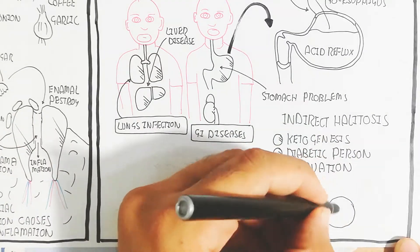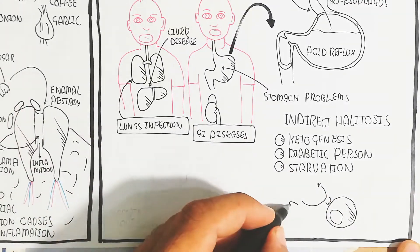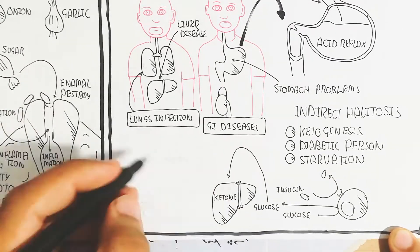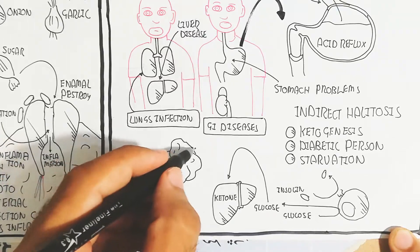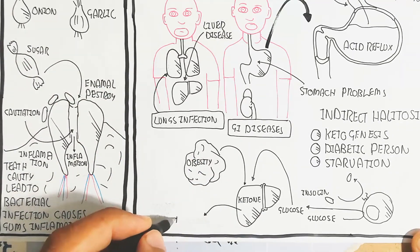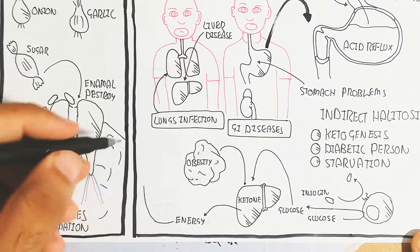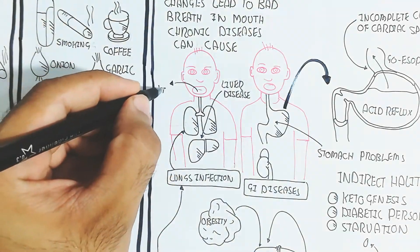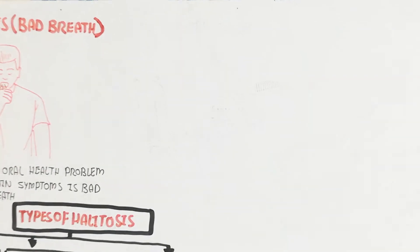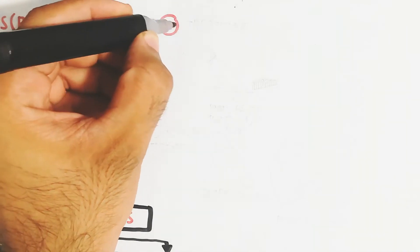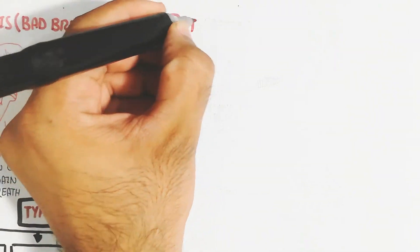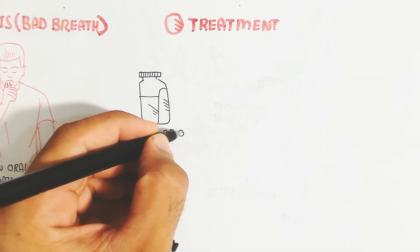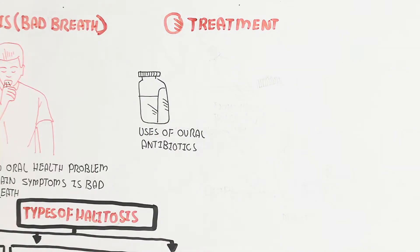Indirect halitosis is through ketogenesis in diabetic persons and starvation. For example, diabetic persons have decreased insulin sensitivity. Insulin will not bind, so glucose will not be taken up. The glucose goes into the liver and lipolysis produces ketones. These ketones breathe out and produce a fruity smell. Ketones are light molecules that can breathe out.